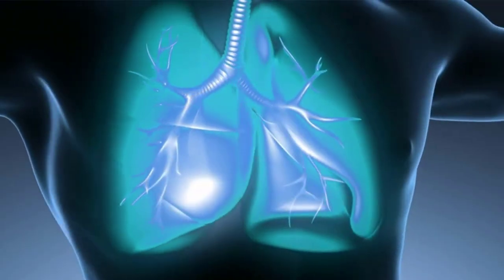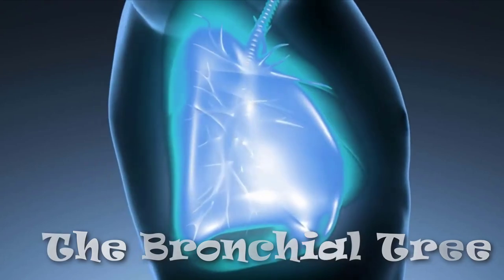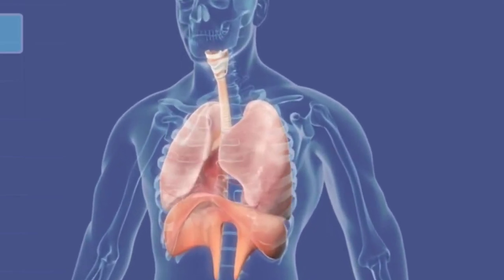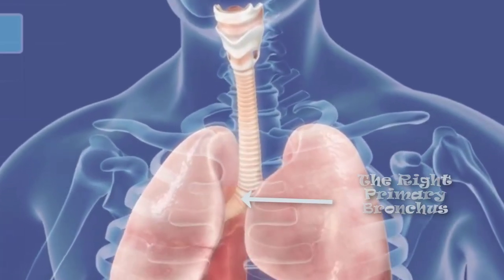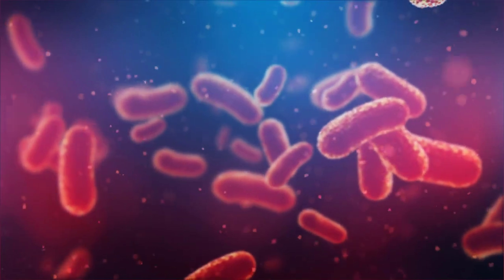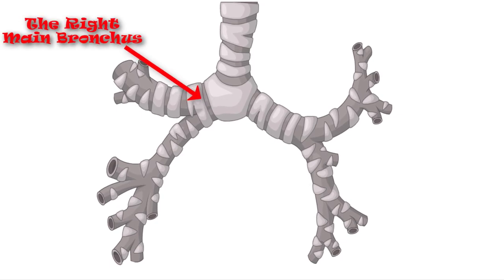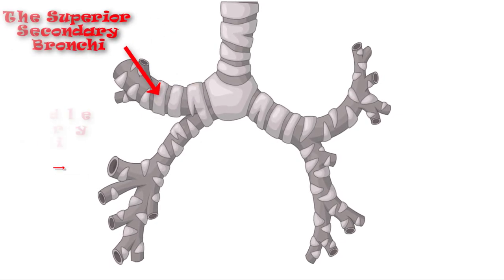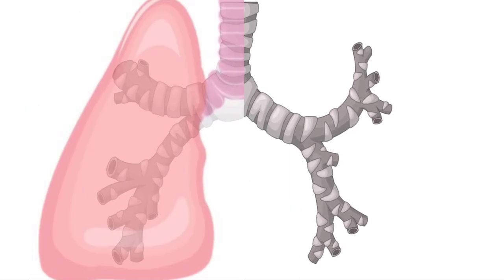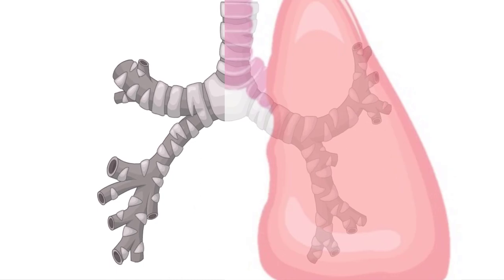Each lung has a branching system of air tubes called the bronchial tree. The bronchial tree extends from the main bronchus to tens of thousands of terminal bronchioles. Arising from the fork in the trachea, the right main primary bronchus is slightly wider and more vertical than the left one. Consequently, inhaled foreign objects lodge in the right bronchus more often than they do in the left. The right main bronchus gives off three branches — the superior, middle, and inferior secondary bronchi — one belonging to each lobe of the lung. The left main bronchus gives off superior and inferior secondary bronchi to the two lobes of the left lung.